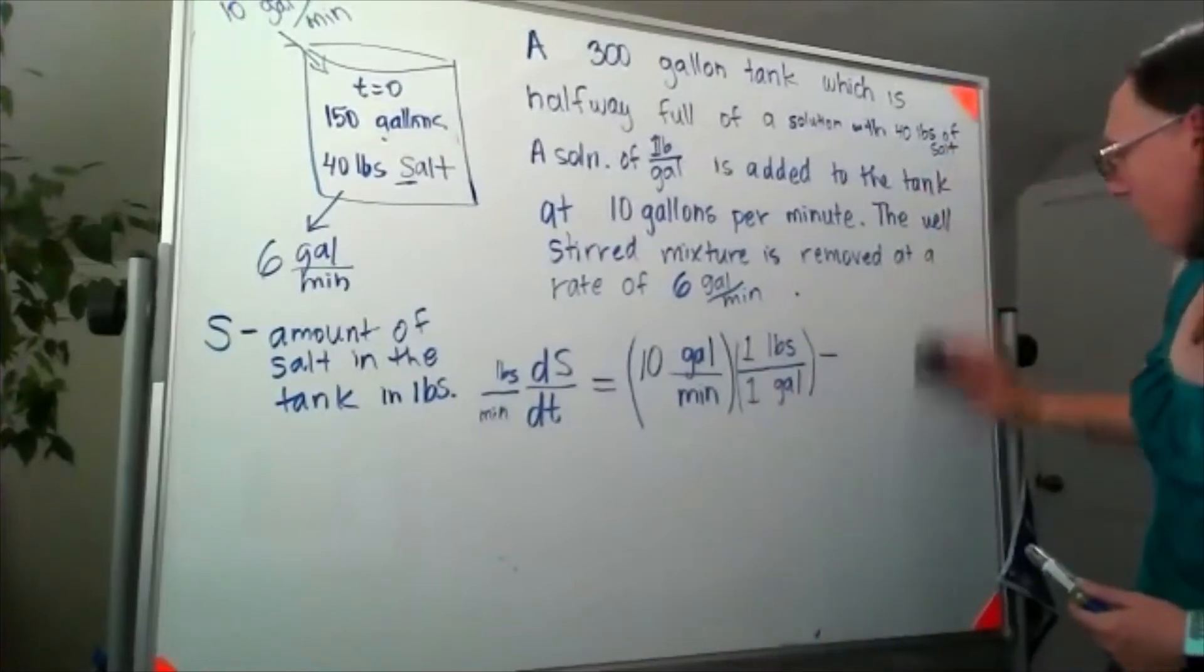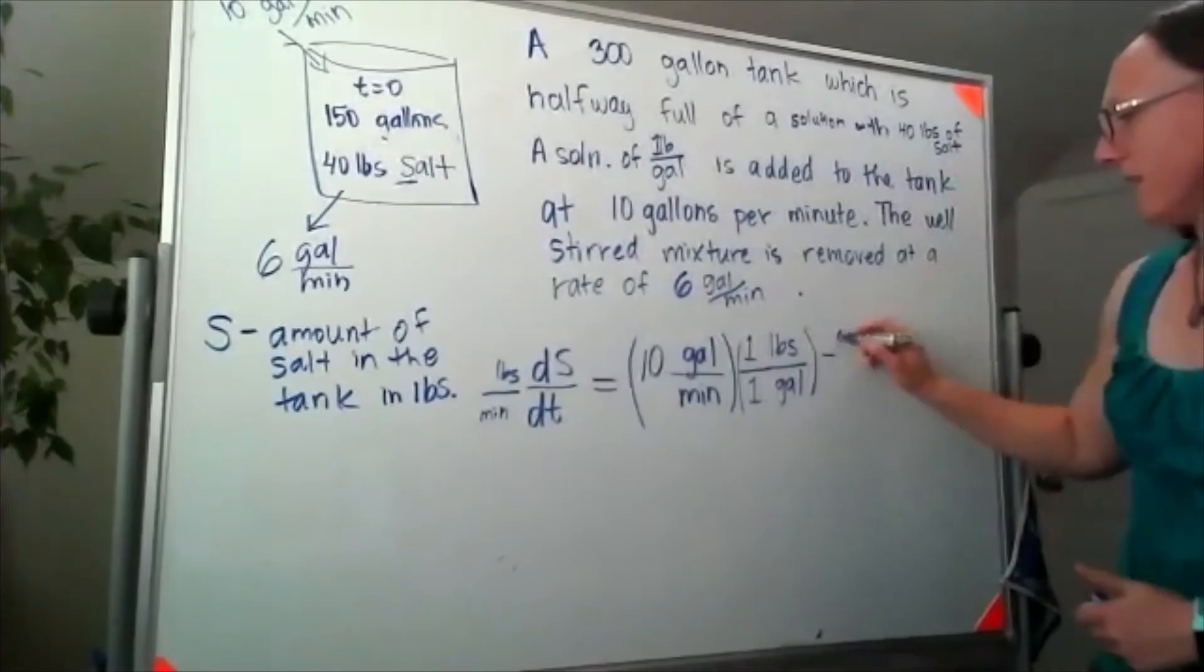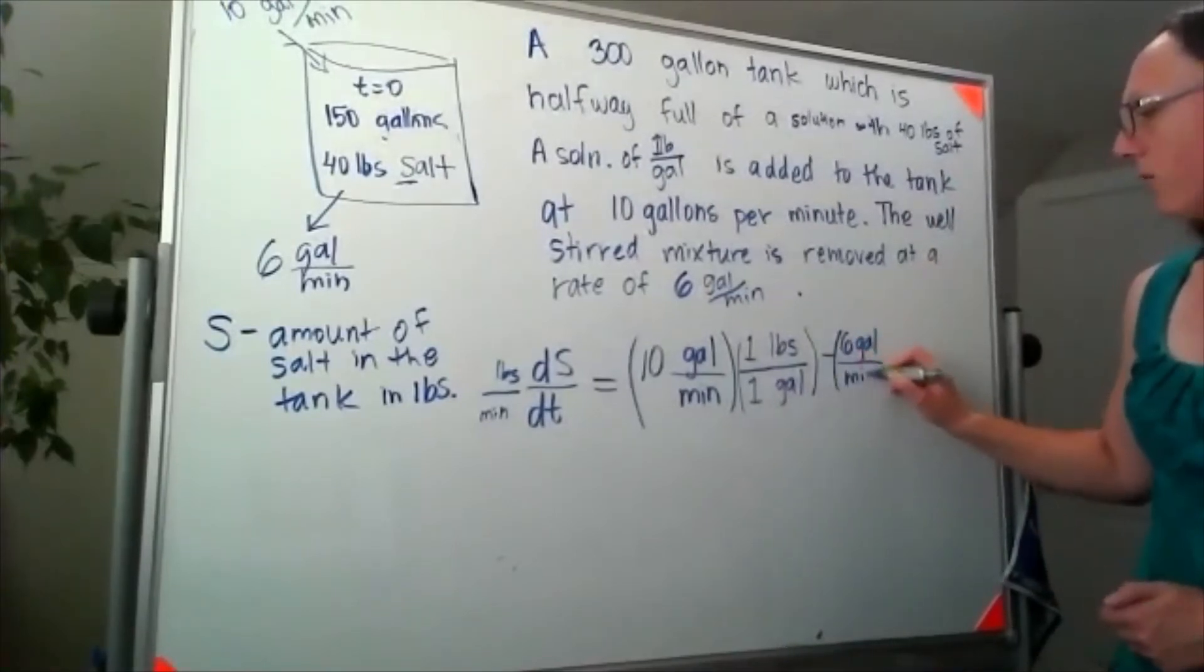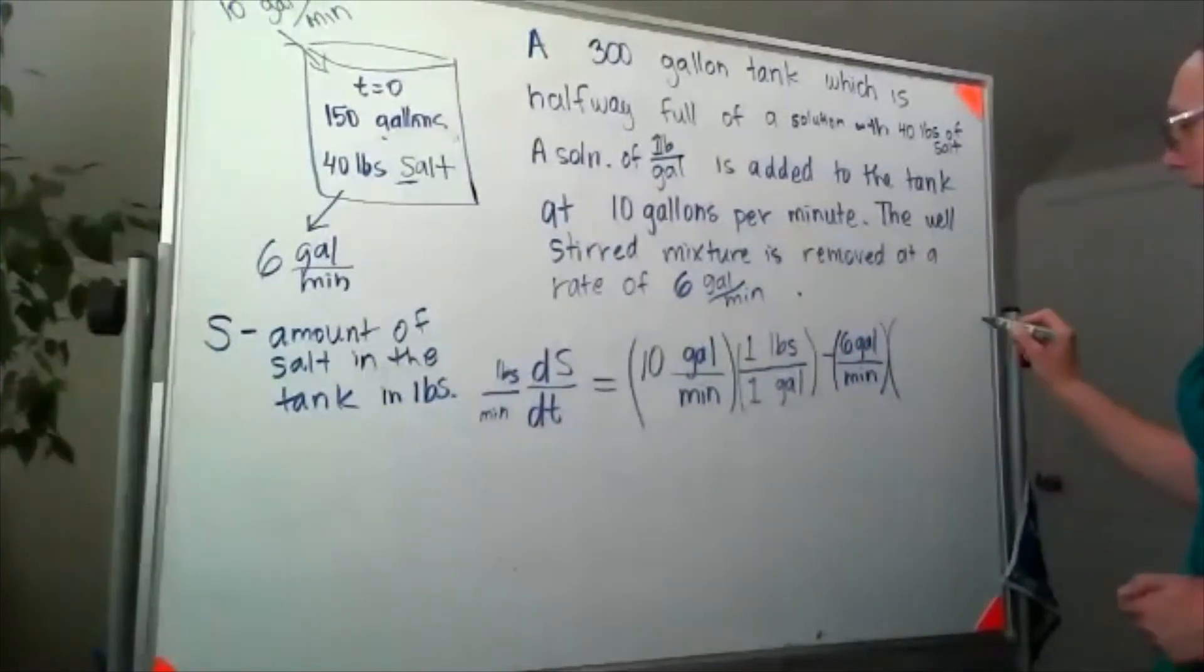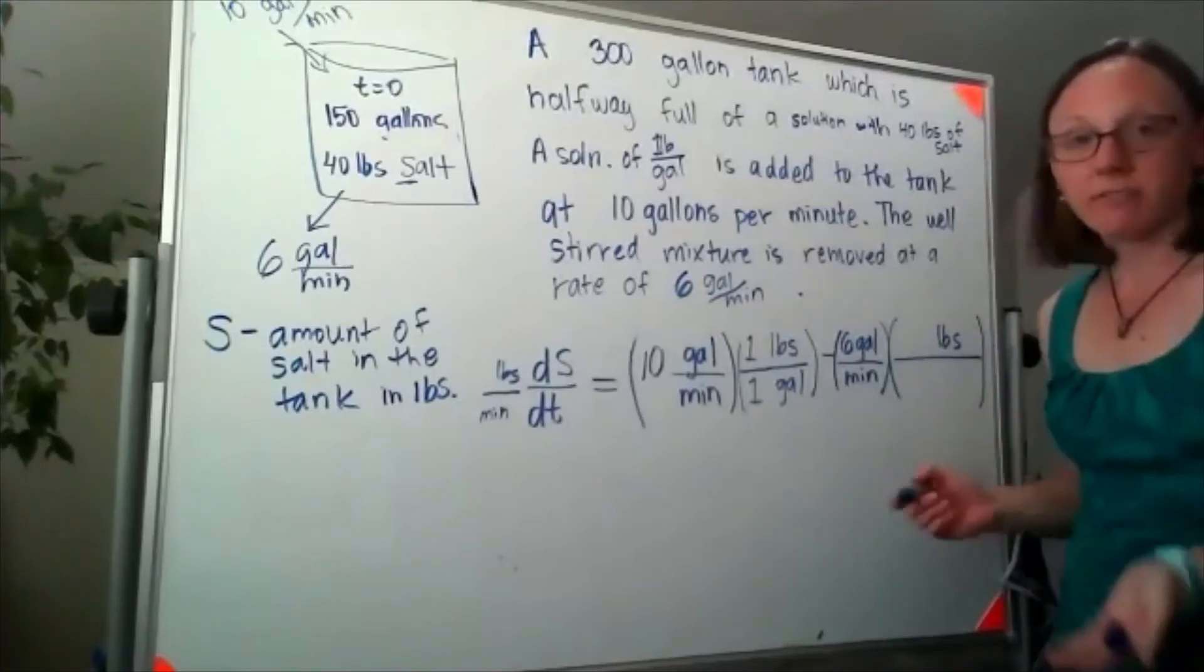And I want to squeeze that over just a little bit so I have just a little more space. So we've got six gallons per minute for the flow rate, but now we need something with units of pounds on top and units of gallons on the bottom.